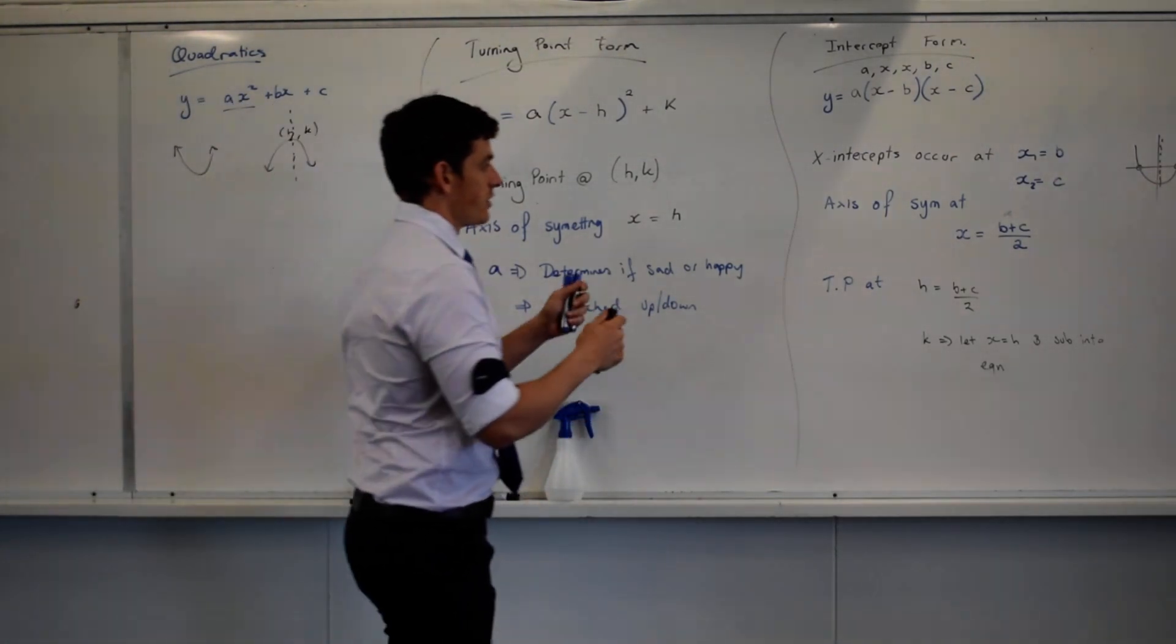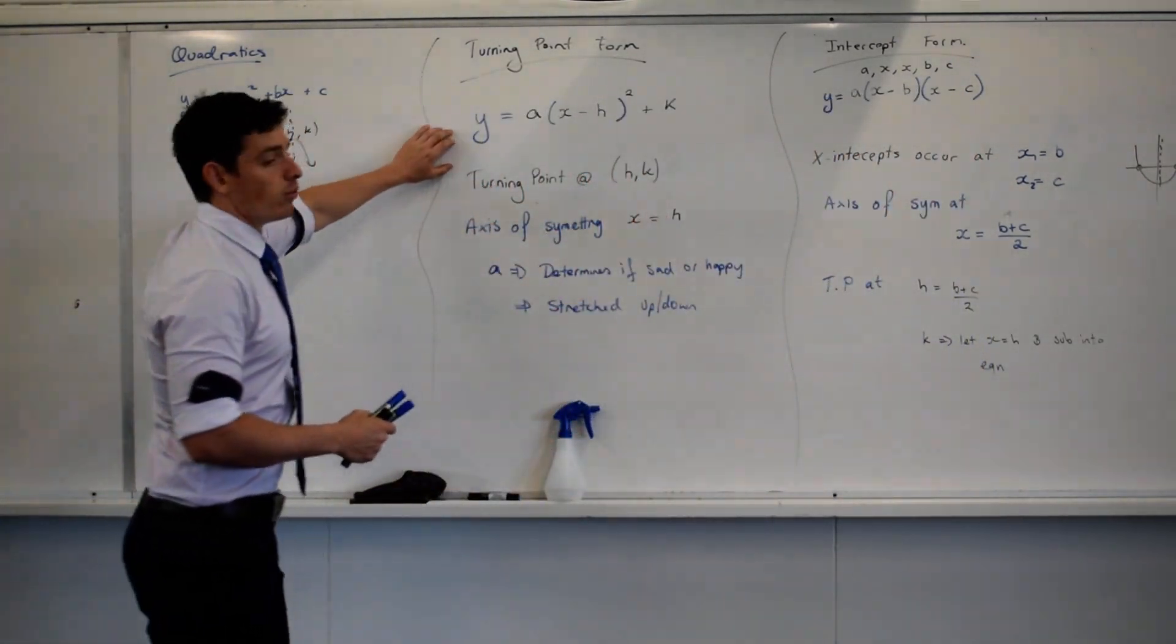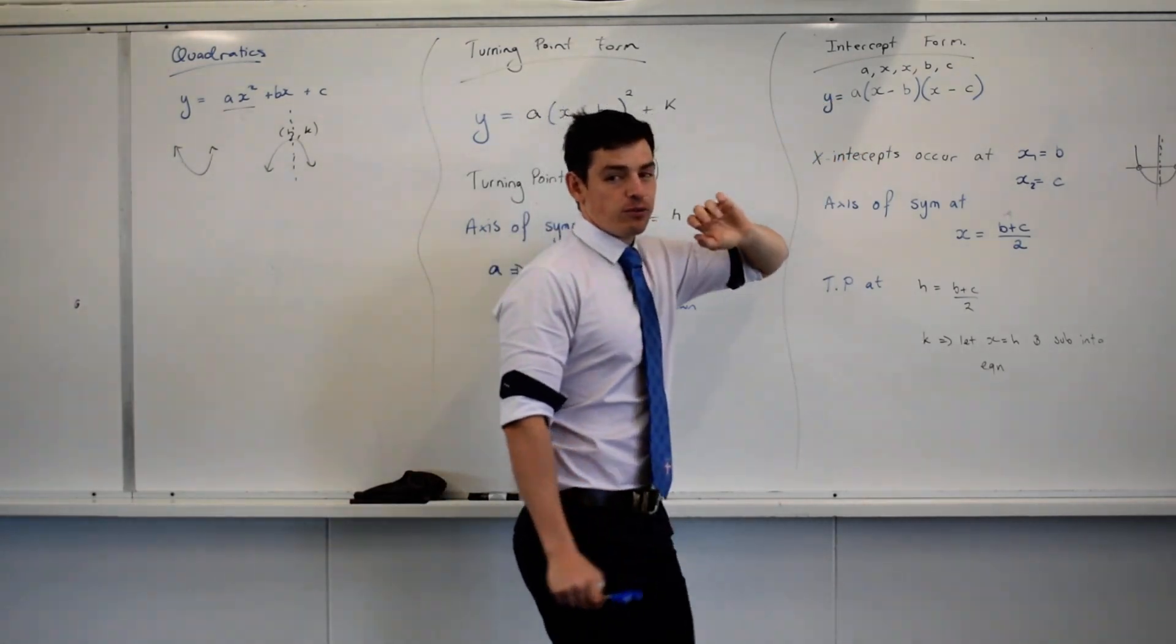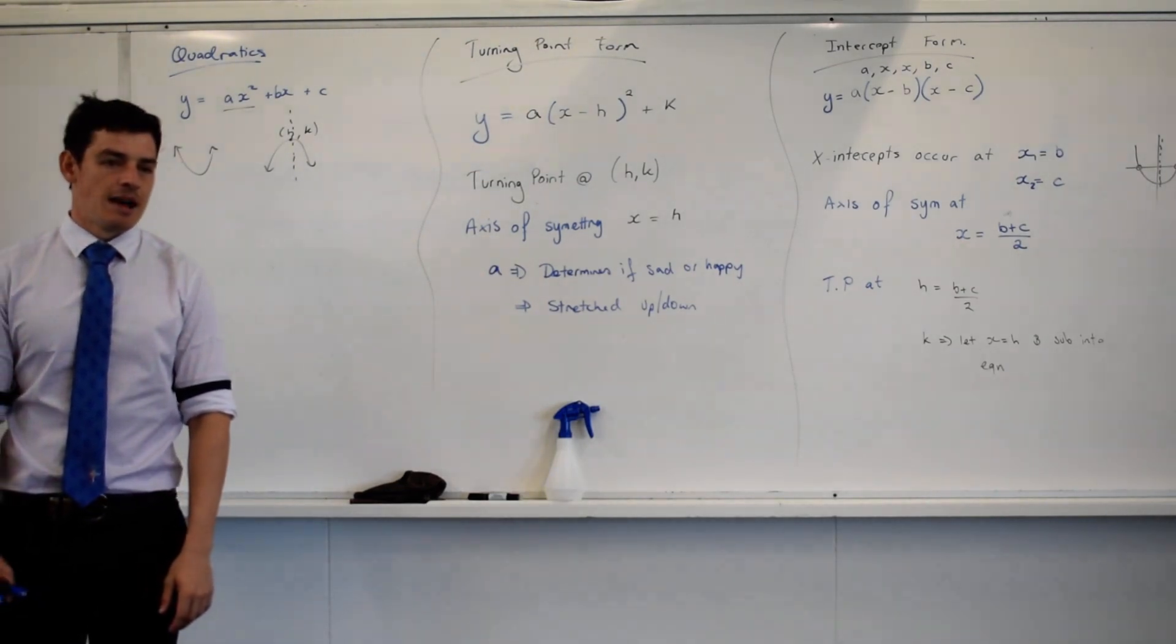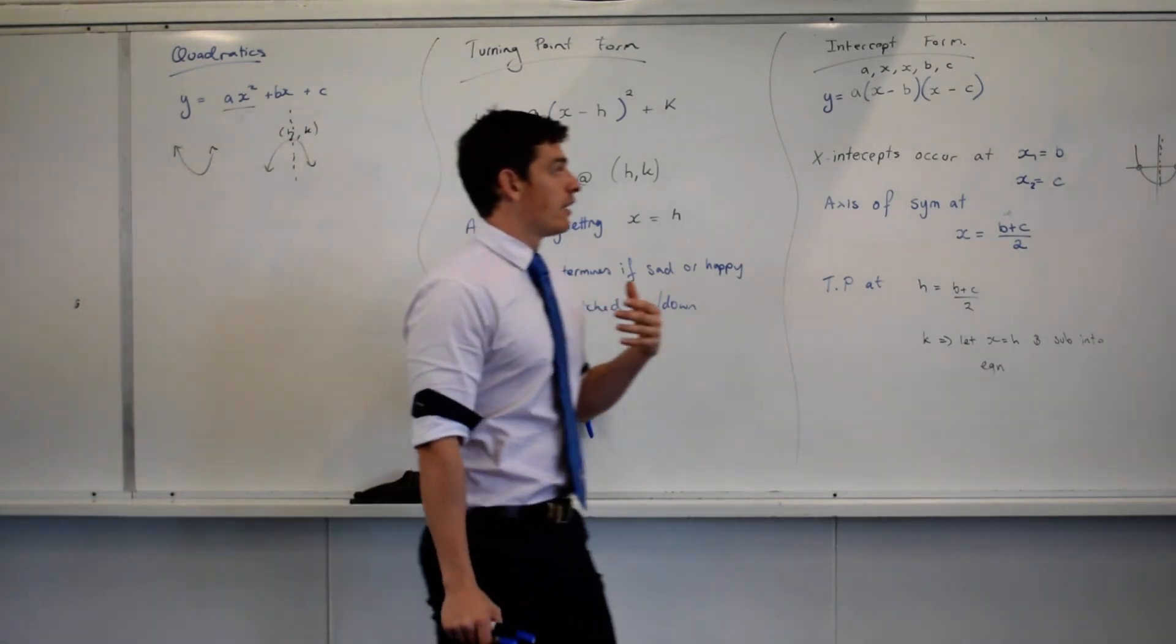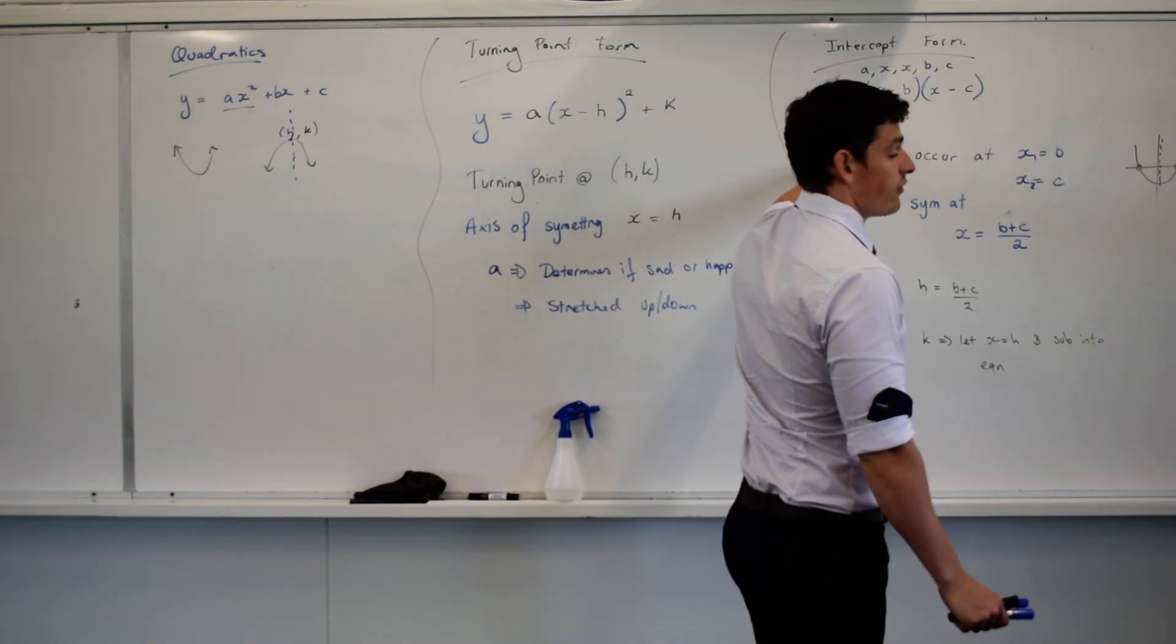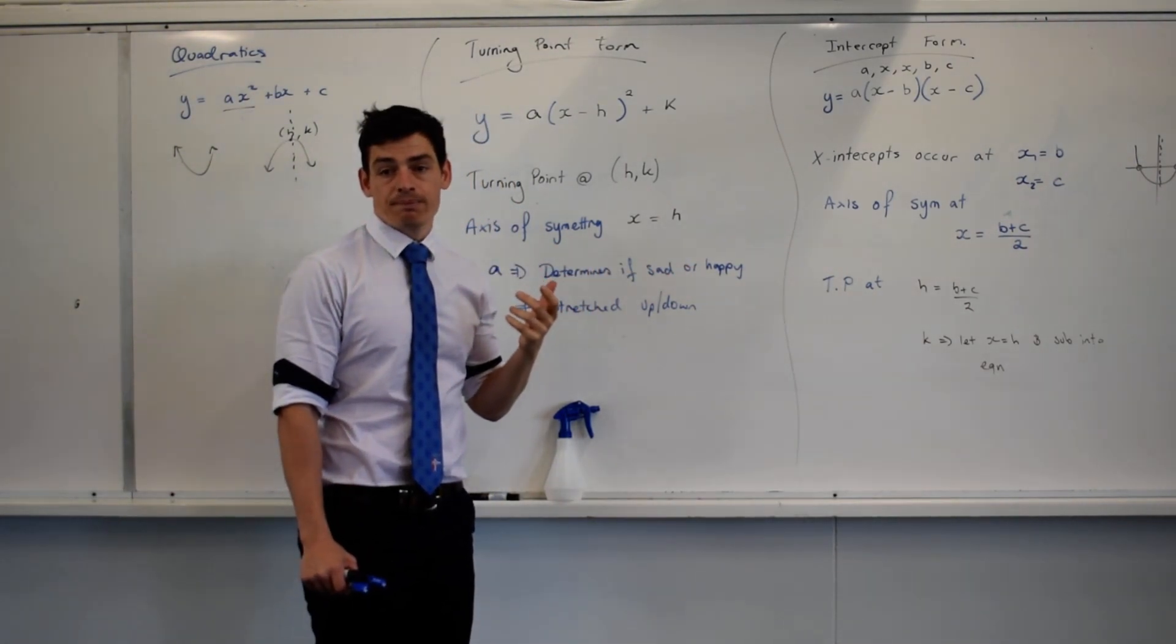So it's really important we understand these different forms because they have their value. When would I prefer to use turning point form? When I have a turning point. When would I prefer to use intercept form? When I have intercepts. So what you need to be able to do is to determine a graph. If you're given intercepts, you should use intercept form. If you're given a turning point, you should use turning point form. Happy with that? Awesome.